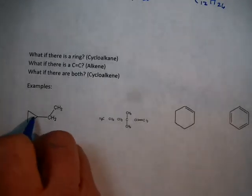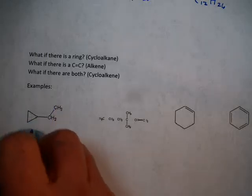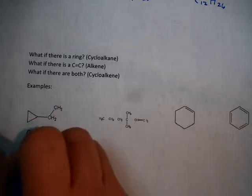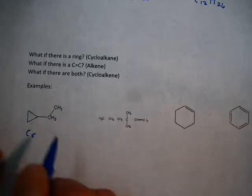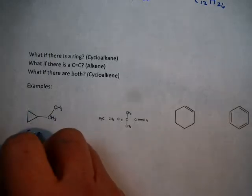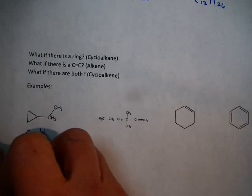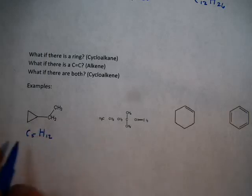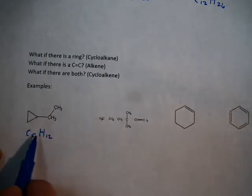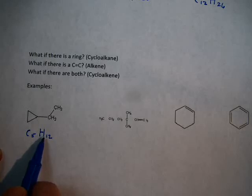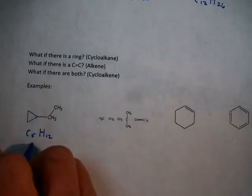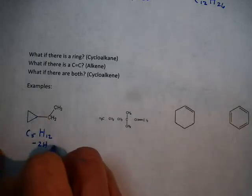Here you have 1, 2, 3, 4, 5. 5 carbons. Now how I like to do it is to say, if everything were normal, no rings and no double bonds, double 5 is 10 plus 2 is 12. Here's how you would always start. Start by saying, how many hydrogens would there be if no double bonds and no ring? And then look and say, oh, we do have a ring, so we subtract 2 hydrogens.